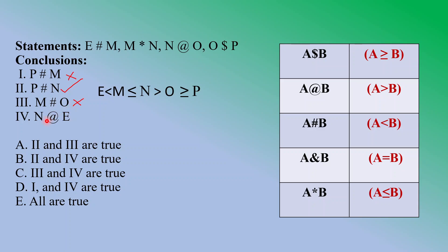Conclusion four: n@ e — greater than — so n is greater than e. You can see clearly that n is greater than e, so conclusion four is also correct. So conclusions two and four are correct, which is given in option B. Let's check the answer — we got the correct answer. Let's proceed to the next question.